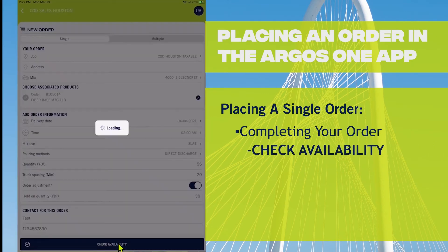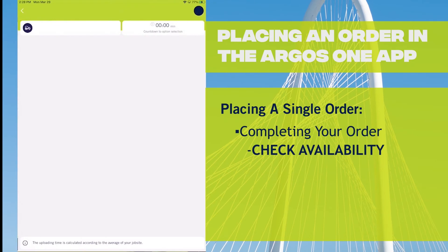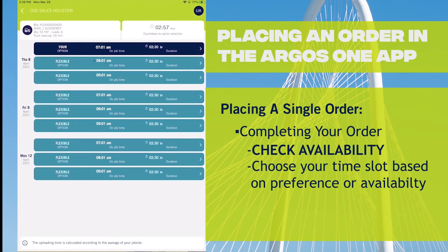Lastly, we're going to click Check Availability. Argos One is going to look at the plant that has most dispatched for this project to look for your available time slot. If your time slot is available, you will see a blue bar and it will say Your Option. You will also be offered other flexible options. If your time slot was not available, all of the options would say Flexible and you would be able to choose the time closest to the one that you requested.